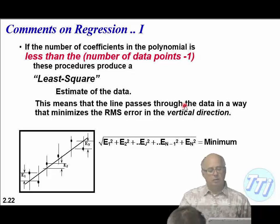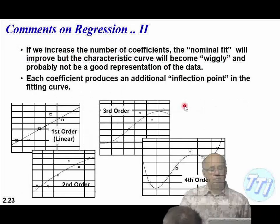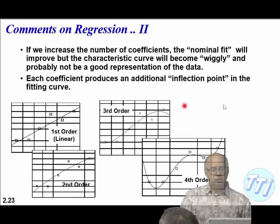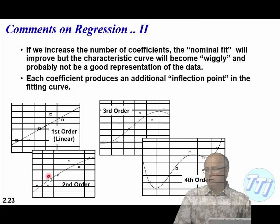We can't go to an infinite order. If I've got 10 data points, I can't use a 12th-order polynomial — it will not work. Here are four fits to the same dataset: top left is the best-fit straight line, bottom left is second-order quadratic, top right is third-order cubic, and bottom right is fourth-order quartic.